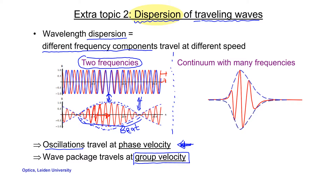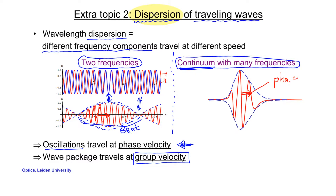Similar arguments apply if you have a wave packet. A wave packet consists of a continuum of many different waves with frequencies typically pretty close together. In this case, you can look at the propagation speed of the oscillations themselves, which travel at the phase velocity, or you can look at the propagation of the group of waves, which can travel at a different velocity — the group velocity.